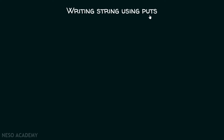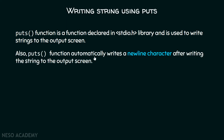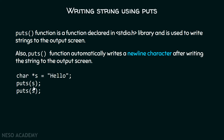Now let's understand how to write a string using the puts function. The puts function is declared in the stdio.h library — the same library that contains the printf function — and is used to write strings to the output screen. With puts, we just pass the pointer to the first character; we don't need to mention %s like in printf, which makes it simpler to write.